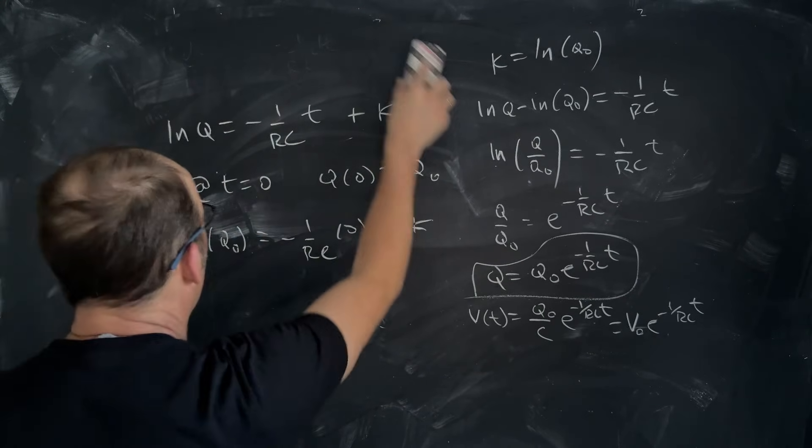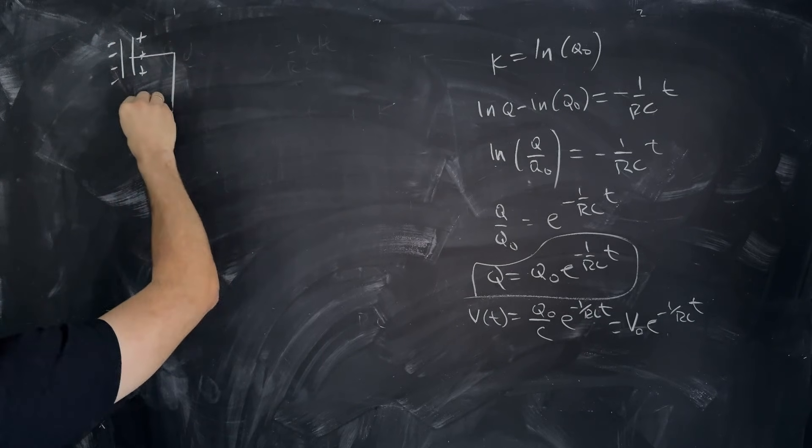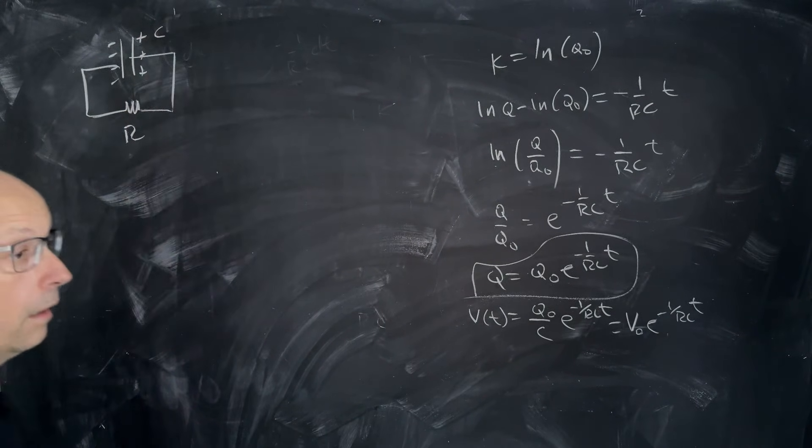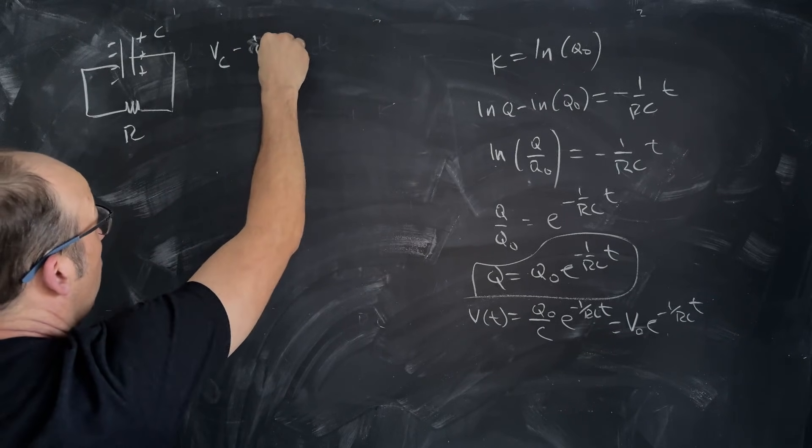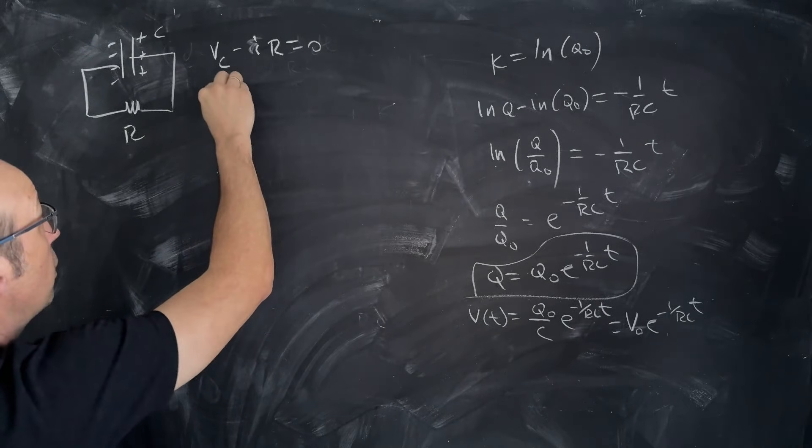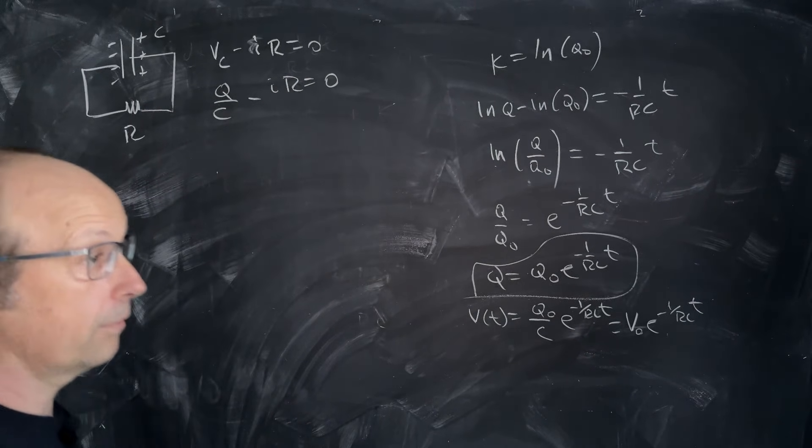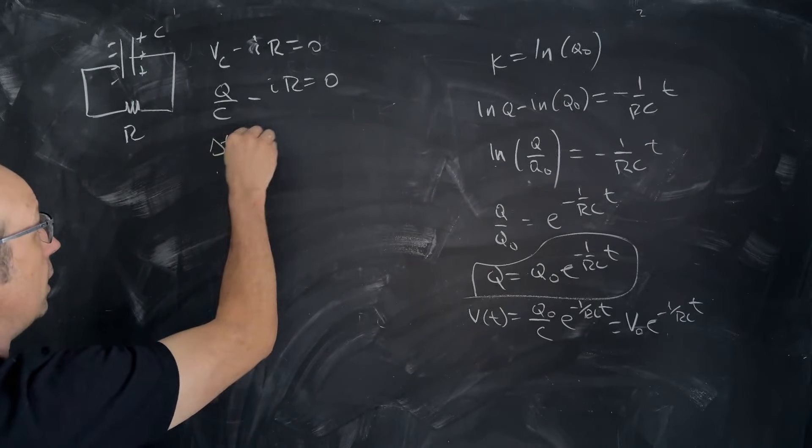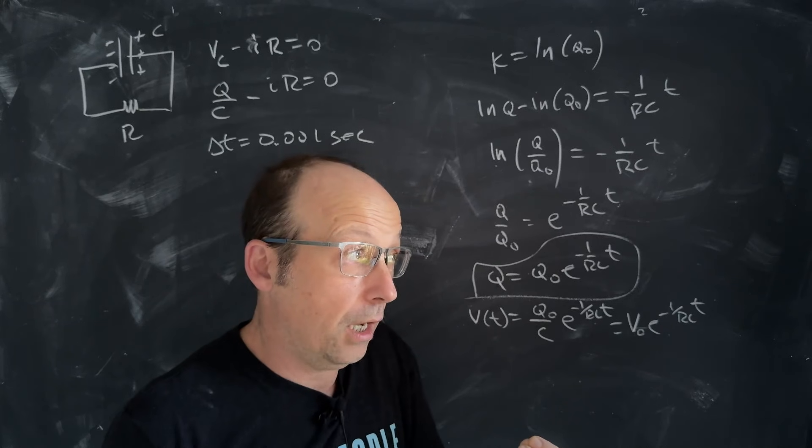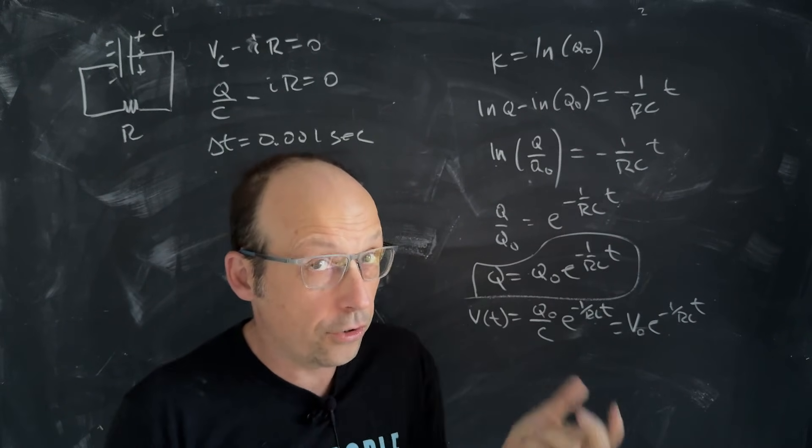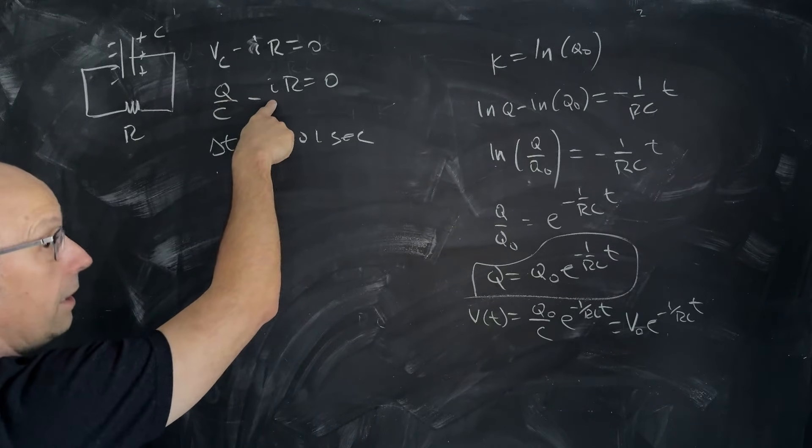But let's do this a different way. Let's go back to our loop rule. So I'm going to draw the picture up here again. So again, if we use the loop rule, I get VC, the voltage across the capacitor, minus ir equals 0. And I'm going to write that as Q over C minus ir equals 0. Now, imagine that I broke this into a very short time interval, delta t is 0.001 seconds. So during that time, there's current flowing out of the capacitor. But if the current's small or the time interval is really small, Q is constant. It doesn't, or approximately constant.